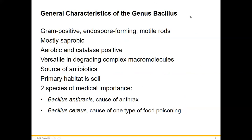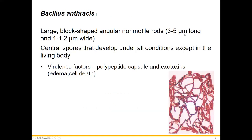The Bacillus genus: gram-positive, endospore-forming, motile, aerobic, and catalase-positive. They're versatile in breaking down different macromolecules — they can metabolize a lot of different substrates. Their primary habitat is soil. The two important species are Bacillus anthracis, causing anthrax, and Bacillus cereus, a food poisoning type.